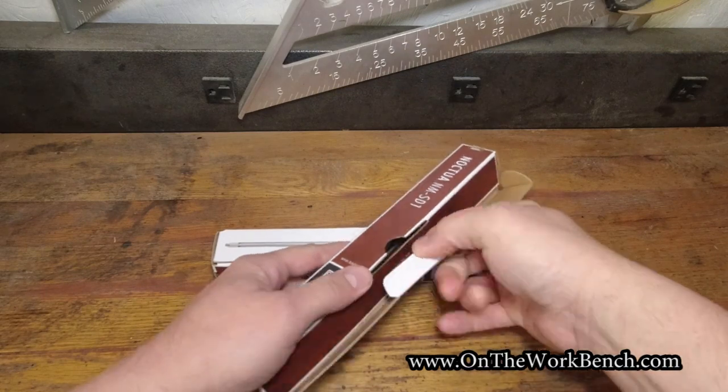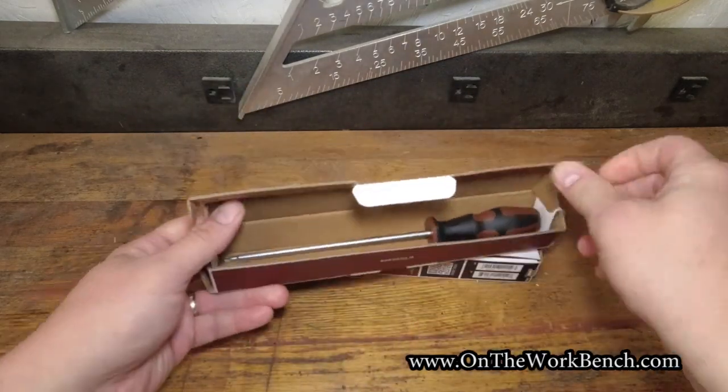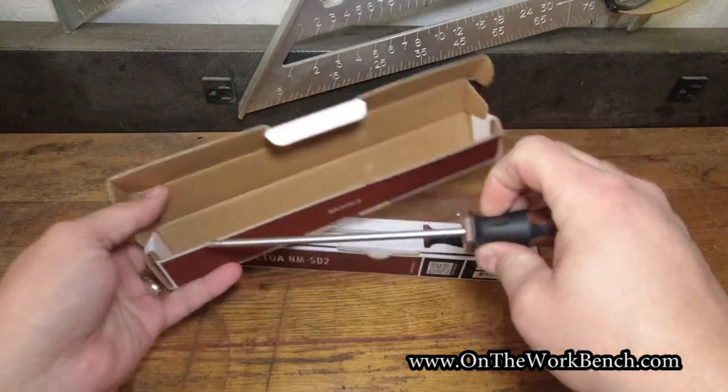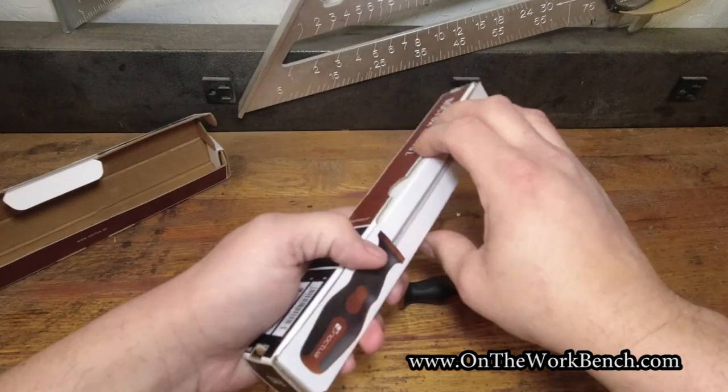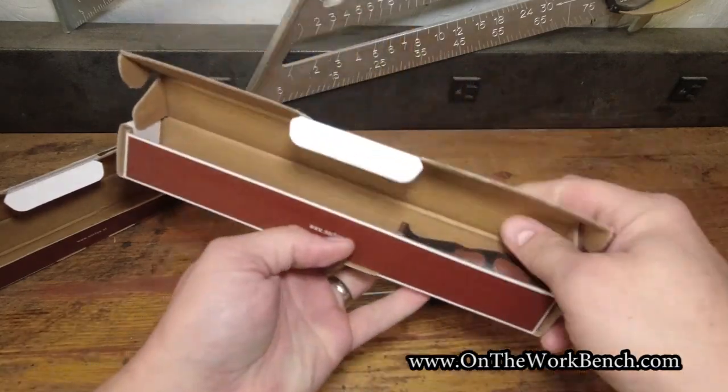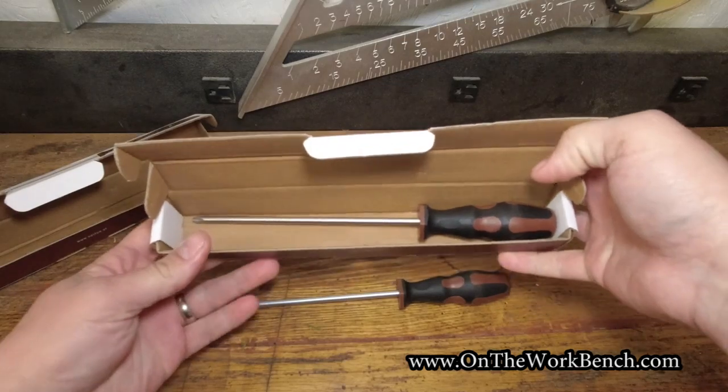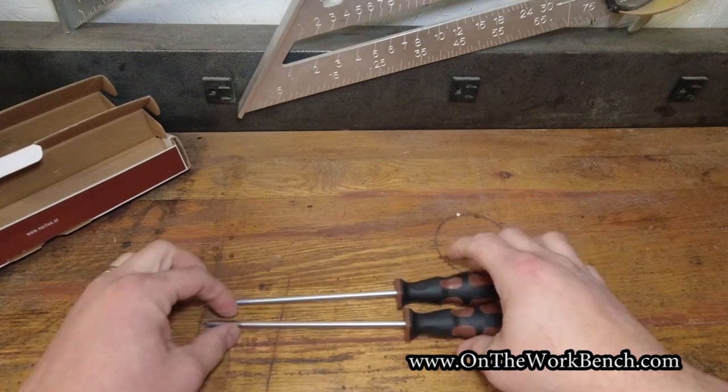They come in their trademark brown appearance. Open the box and we have the screwdriver. That's the Torx T20. And we will open the other one, also just placed individually in the box, is the Phillips No. 2.